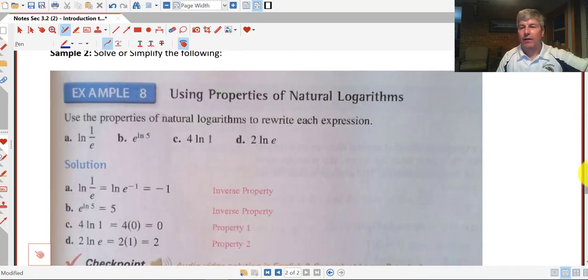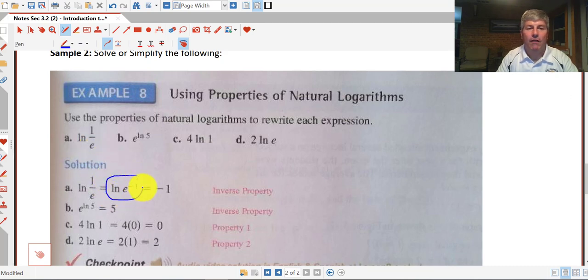Moving on to our second sample here. Use the properties of natural logarithms to rewrite each expression. The natural log of 1 over e. 1 over e, e is in the denominator, that's the same thing as the natural log of e to the negative 1. So that is negative 1, using our inverse property.